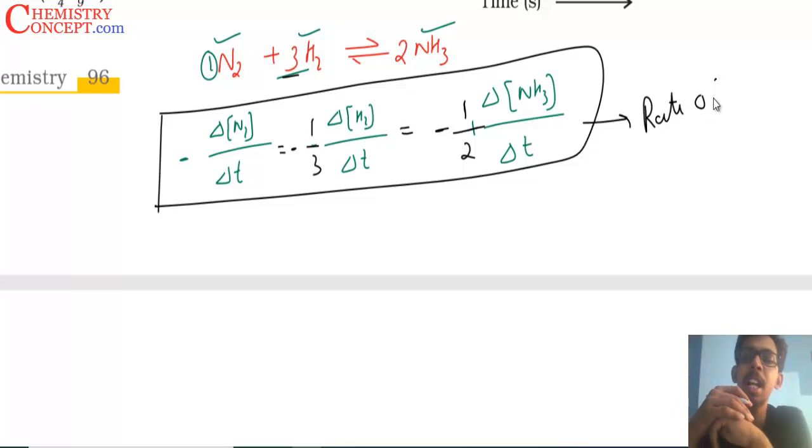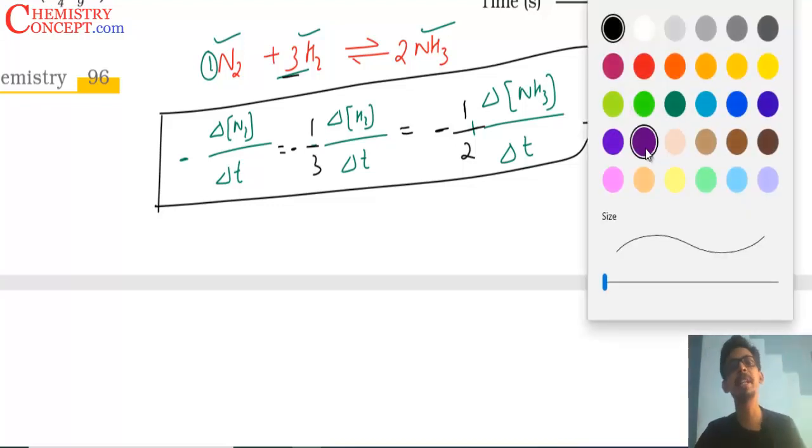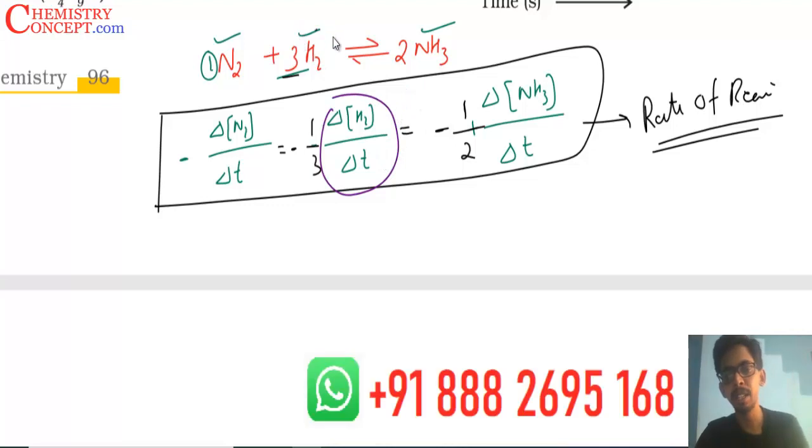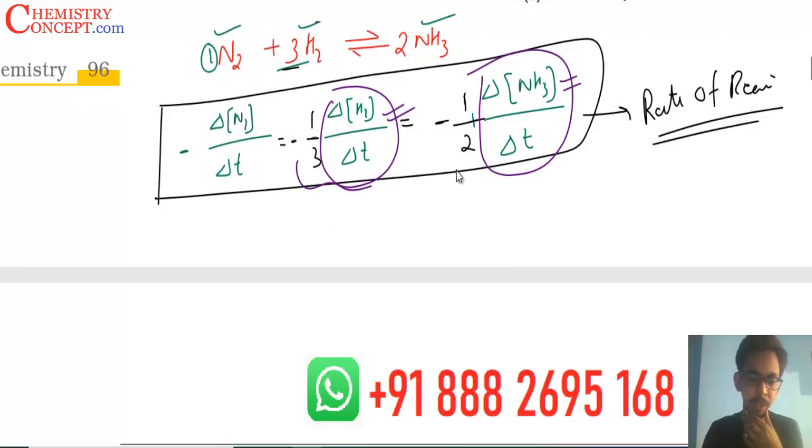In the time one molecule of nitrogen reacts, three molecules of hydrogen react and two molecules of ammonia are formed. So the rate of consumption of nitrogen, hydrogen, and production of ammonia cannot be same. To make them same, we have to divide them by their respective stoichiometric coefficients. Nitrogen case is 1, hydrogen case is 3 so divide by 3, ammonia case is 2 so it becomes 1/2. Now they are equal and they are called rate of reaction. If I don't divide, then they are called rate of disappearance of hydrogen, rate of appearance of ammonia, rate of consumption, rate of formation. When we divide by stoichiometric coefficients, they become rate of reaction.